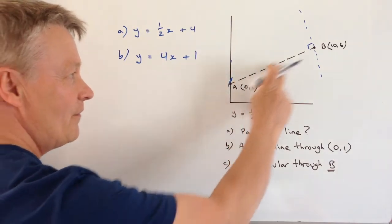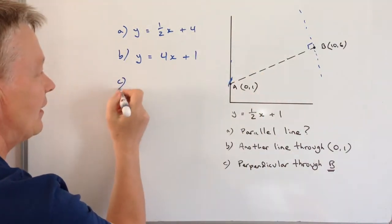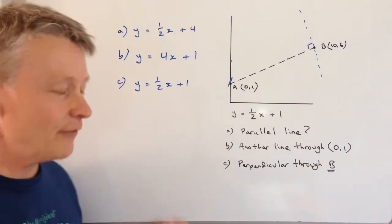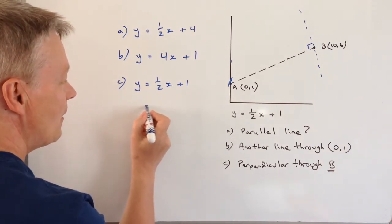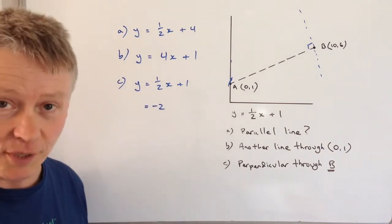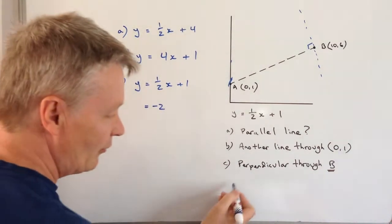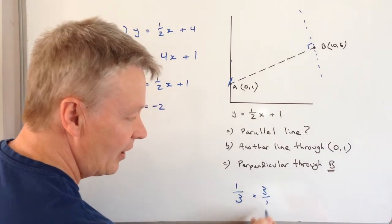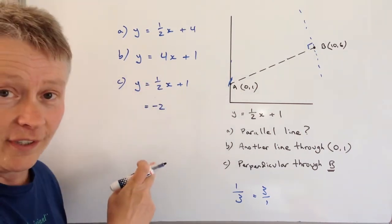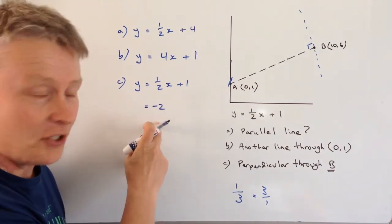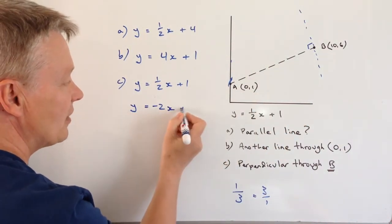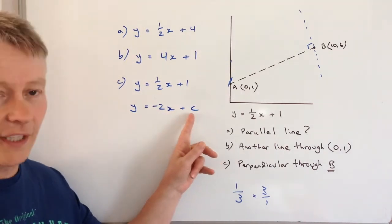At the moment the gradient of this line ab is y equals a half x plus one. Well the negative reciprocal of this is minus two. So what we've done is we've flipped it over which is the reciprocal. It's a bit like saying the reciprocal of one third is exactly the same as three over one. So this is the reciprocal, it's two over one but then it's the negative so it's minus two. So the gradient of this line is minus two x plus and we need to work out this value of c.